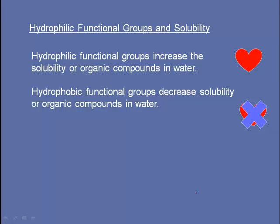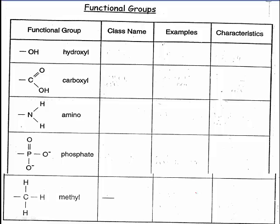Let's go back and take a look at the functional groups that can replace those hydrogens on those carbon chains, rings, and branched carbon chains. The first one is the hydroxyl group. These are alcohols. Examples include ethanol, glycerol, and sugars. On any of those molecules, you would expect to see an OH group. These are polar and hydrophilic, and they tend to dissolve easily in water.